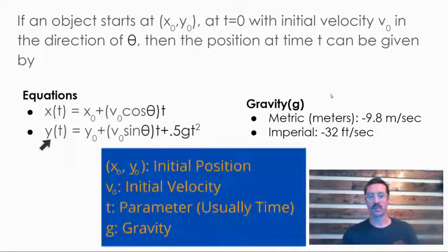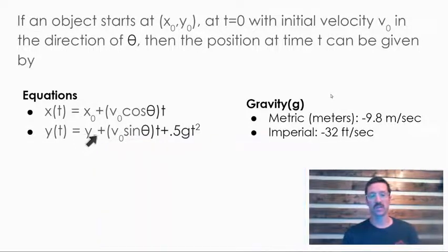For the vertical movement, y of t, we take our initial height of the object, which you could read as y naught or y initial, plus our initial velocity times the sine of the angle times t, but then we have to take into account the effect of gravity, so that's going to be plus 0.5 g t squared.